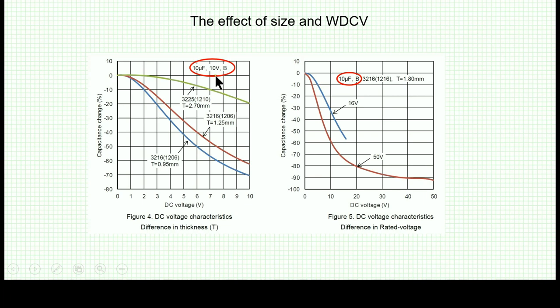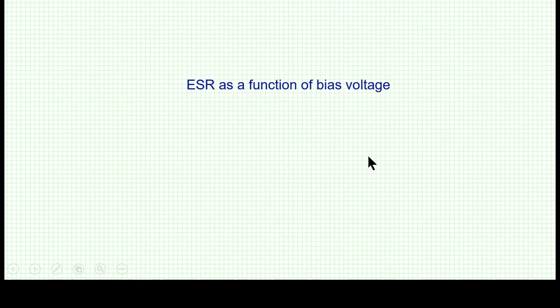Here we see a 10 µF, 10 V capacitor — the only difference is the package. The smaller package shows a huge capacitance drop with voltage, while the larger package shows a relatively moderate drop. The same trend is seen across different materials. These are the common features and characteristics, and now let me move into something which is less known.